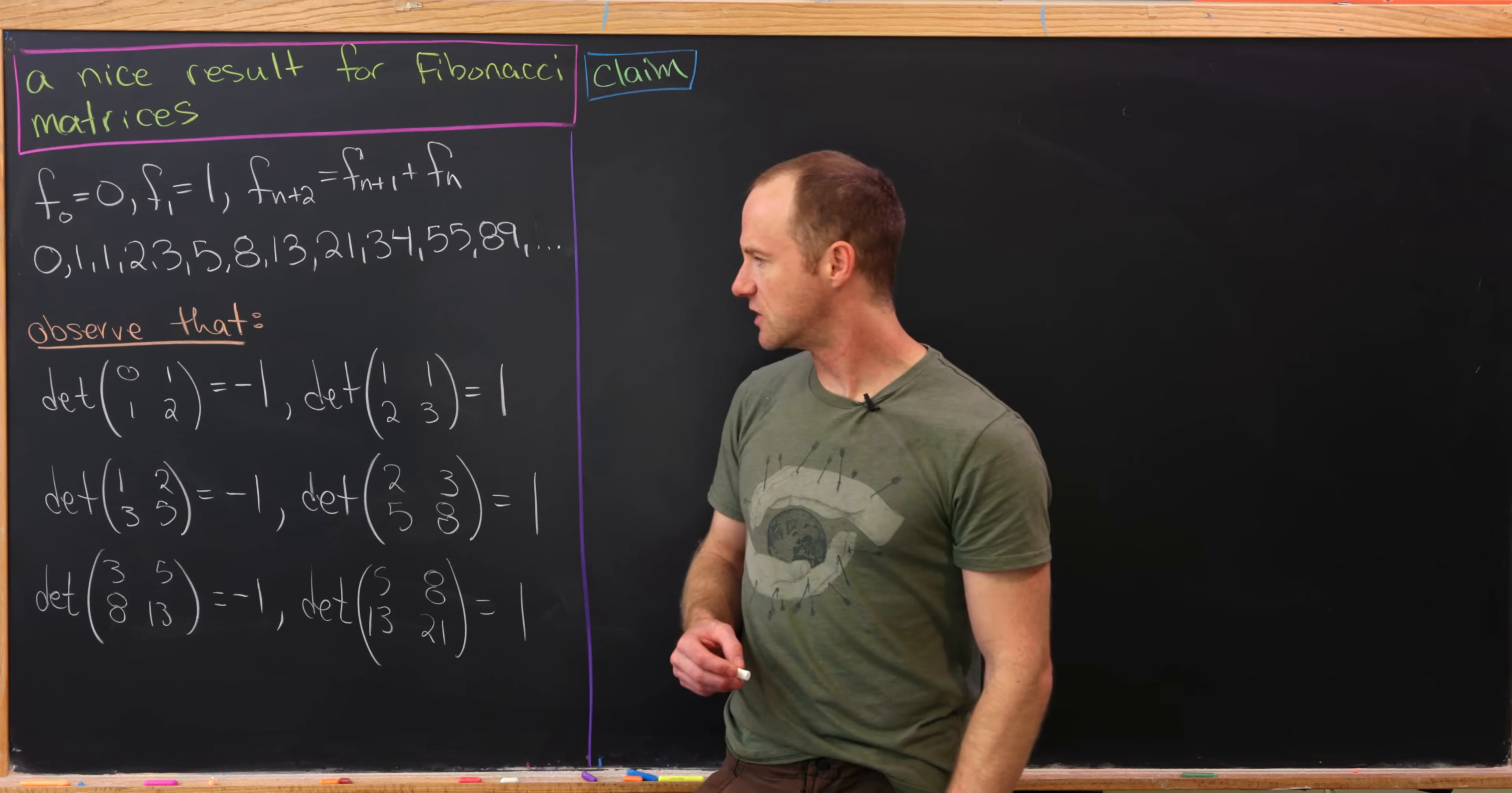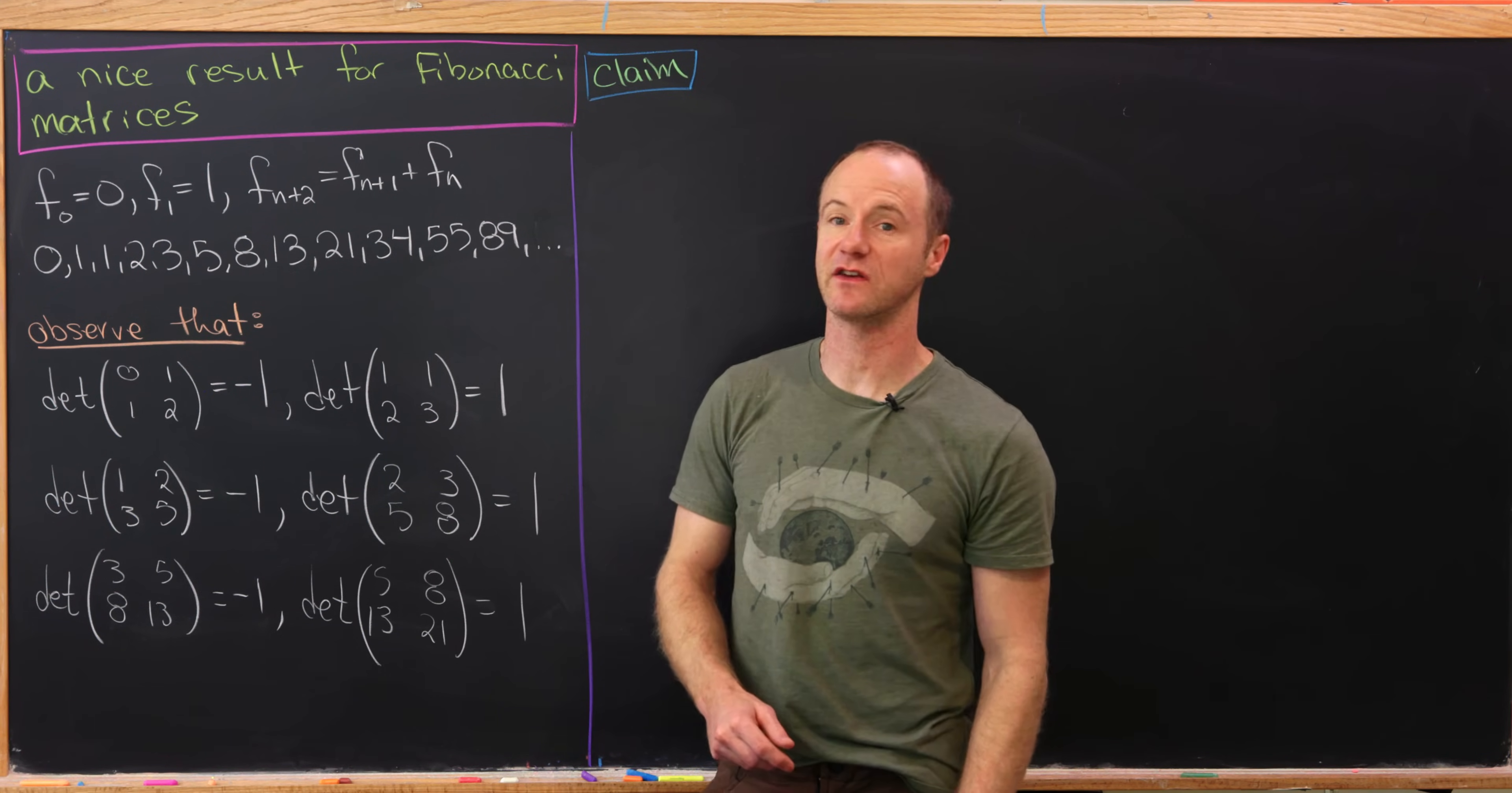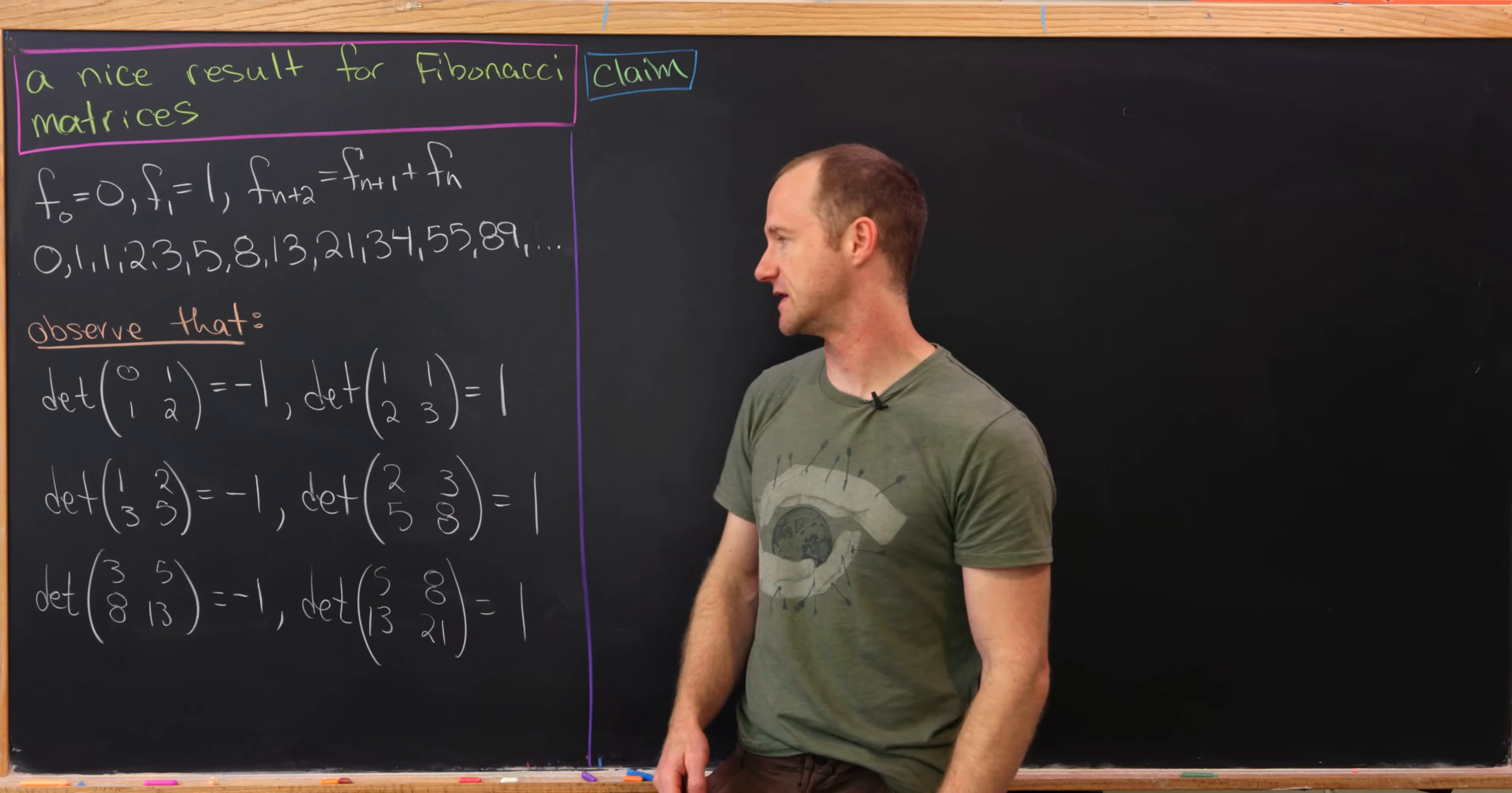Now what I'd like to notice is that if we fill matrices with Fibonacci numbers just by working across rows one at a time, we get this nice alternating property of the determinant. So notice the determinant of 0, 1, 1, 2 is negative 1. Those are the first four Fibonacci numbers written row-wise.